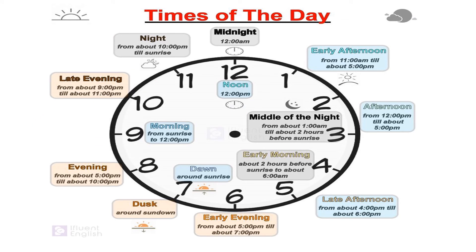Here is the picture which shows you the night time. For example, night starts from about 10 pm till sunrise. Late evening from about 9 pm till about 11 pm. Dusk is the time around sunset or sundown. Early evening starts from about 5 pm till about 7 pm.